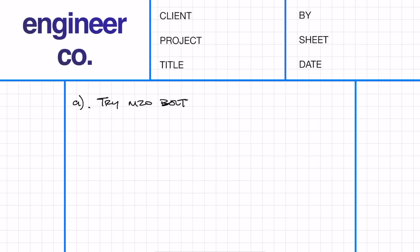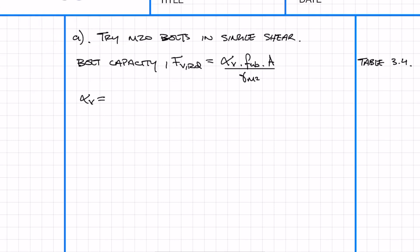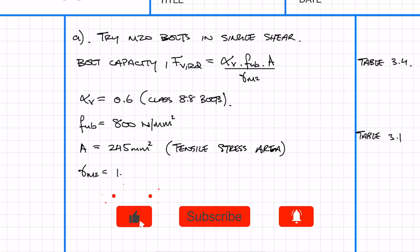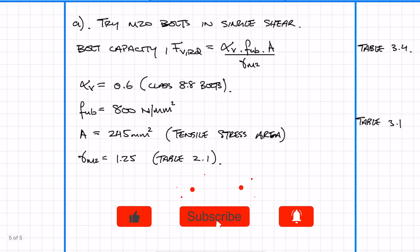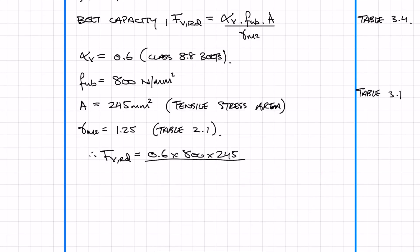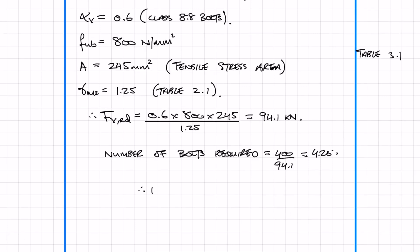So we're going to try M20 bolts in single shear. The bolt capacity is given by this equation and you can find the values in tables 3.4 and 3.1. We simply plug in the numbers and we get a bolt capacity of 94.1kN. To work out the number of bolts we simply divide the design shear force by the bolt capacity. We'll round up to an even number, so we need to provide 6 M20 bolts with a grade of 8.8.